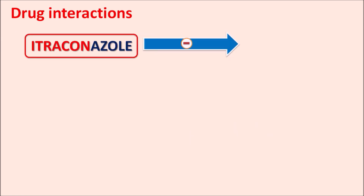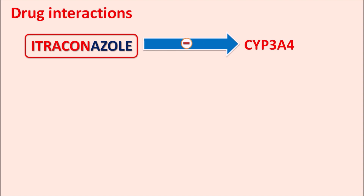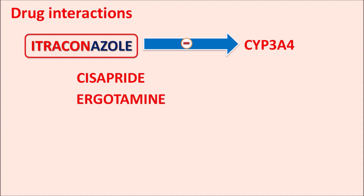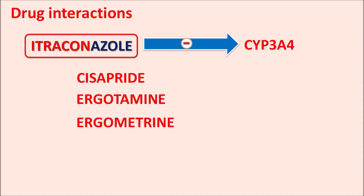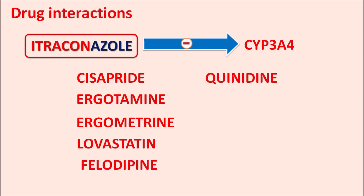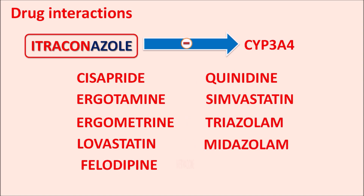Since itraconazole inhibits CYP3A4, it can affect the metabolism of various drugs such as cisapride, ergot derivatives like ergotamine and ergometrine, statins like lovastatin and simvastatin, calcium channel blockers like amlodipine, quinidine, triazolam, midazolam, and methadone. The metabolism of all these drugs is affected by itraconazole, resulting in serious adverse reactions. Therefore, itraconazole should not be combined with these drugs and this combination is strictly contraindicated.